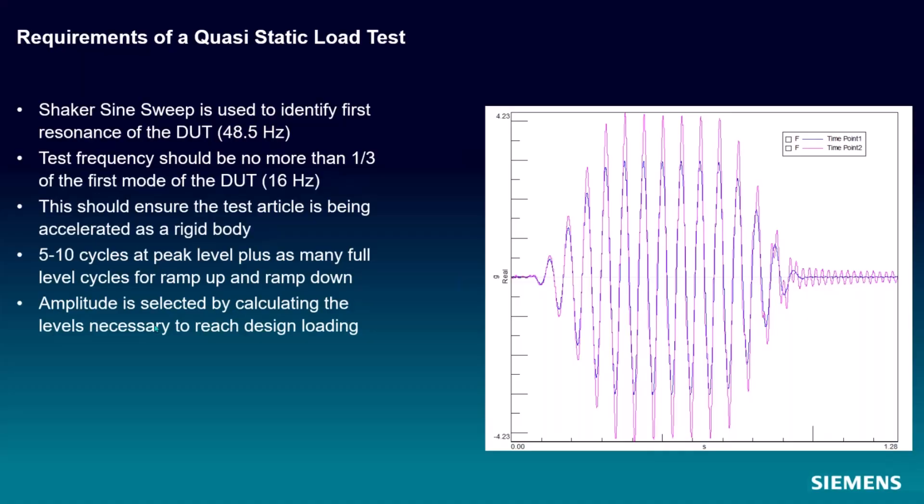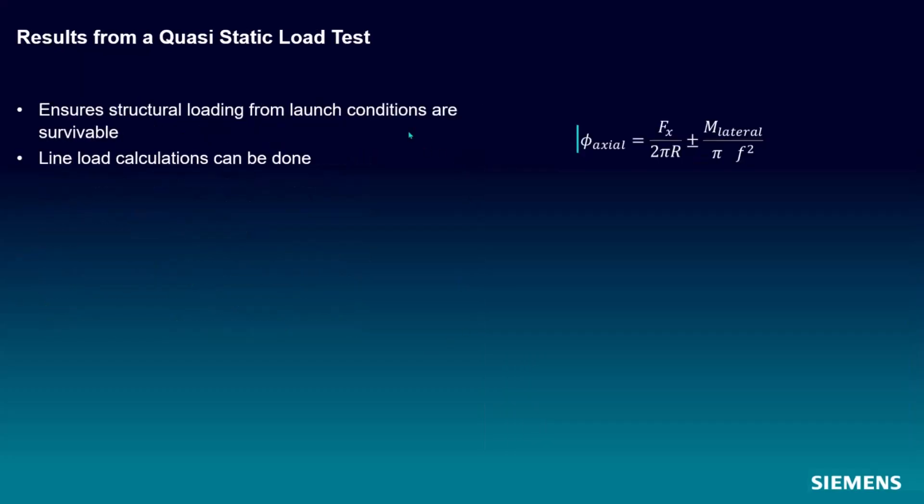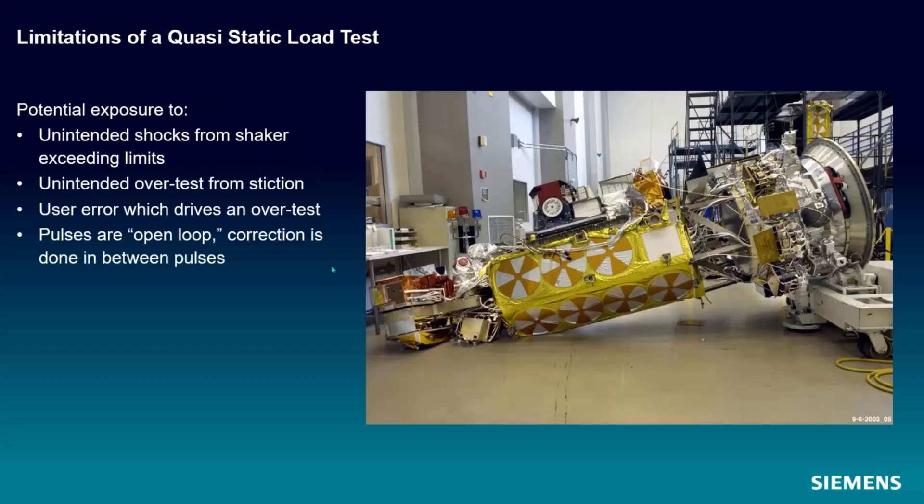And that amplitude is selected by figuring out what we need to drive our structure at to reach our necessary loading from our design criteria. That can typically be done by instrumenting your structure with strain gauges, but it can also be extrapolated from pre-test data or modeling data to figure out what that amplitude needs to be. And then once we get results, we can do things like calculate our axial loading and our load line calculations. All right, so there's a bunch of equations that go into that as well.